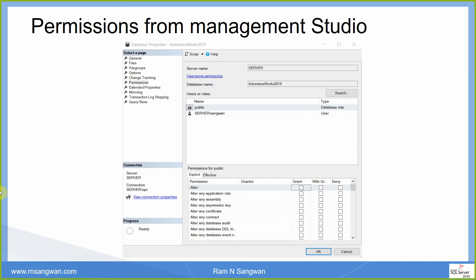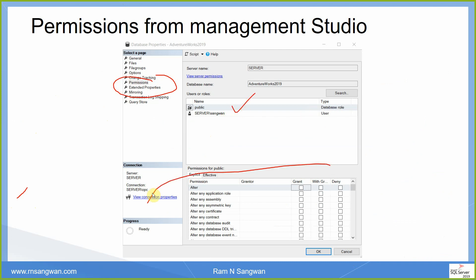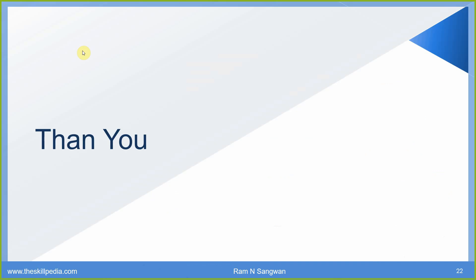To manage permissions from Management Studio, go to the user, right-click, and select Permissions. In the Permissions tab, you can select all the permissions on all users, objects, and securables. That's all for this session, thank you very much.